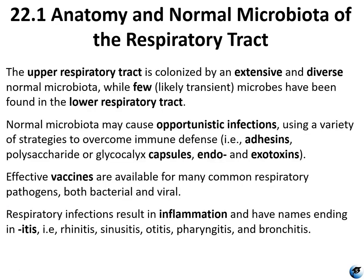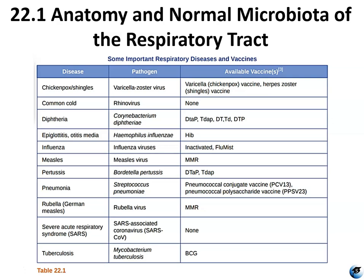The upper respiratory tract has a huge diversity of normal microbiota, while the lower respiratory tract has relatively few, usually transient microbes. Normal microbiota can cause opportunistic infections, but vaccines are available for common respiratory pathogens, both bacterial and viral. Most respiratory infections cause inflammation and usually have names ending in -itis, such as rhinitis, sinusitis, pharyngitis, and bronchitis. This table lists important respiratory diseases and the vaccines generally used to treat those diseases.